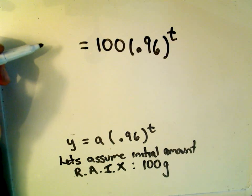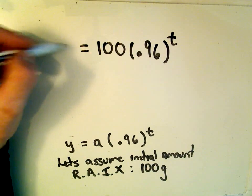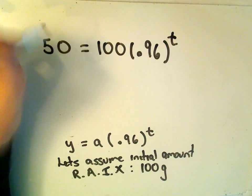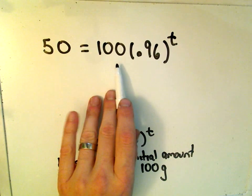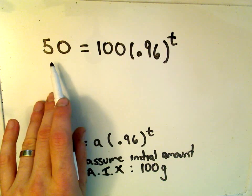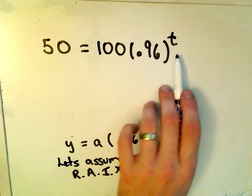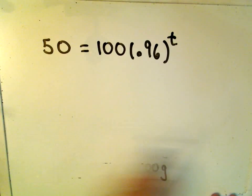Now if we want to have half of the original amount, well, half of 100 would simply be 50. So we start with an initial amount of 100, we end up with 50 grams. We want to know the time required to solve that. So this is now simply the equation that we're going to have to solve.